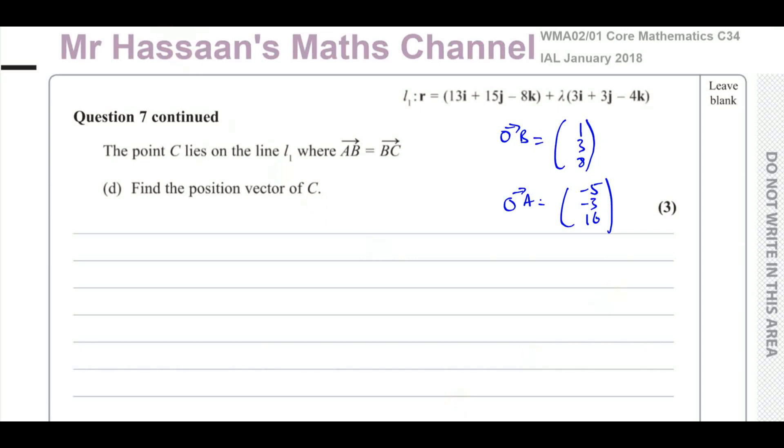And now for part D. It says the point C lies on line 1, where vector AB is equal to the vector BC. Find the position vector of C.